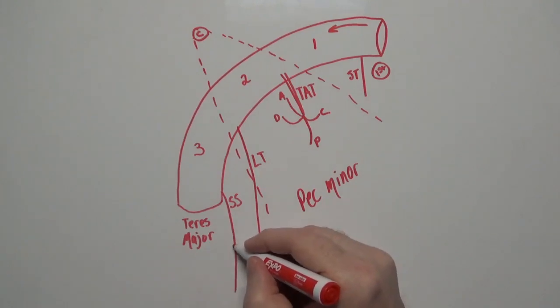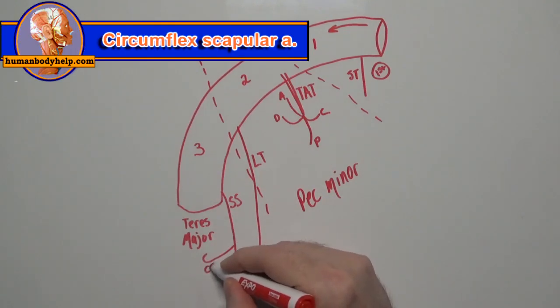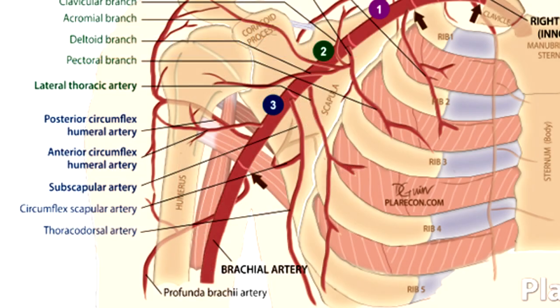From the subscapular artery, we'll have a branch that wraps around the scapula called the circumflex scapular artery. It wraps around the back between the lateral border of the scapula and the teres major through the triangular space.